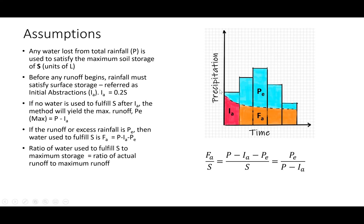FA is used to satisfy S. When we get rainfall, some part satisfies surface storage and some part satisfies soil storage. The amount of water used to satisfy soil storage is total rainfall minus initial abstraction, and the actual direct runoff is total rainfall minus initial abstraction minus continuing abstraction or soil retention. In developing this empirical method, SCS found that the initial abstraction was 20 percent of the maximum soil retention, so IA = 0.2S.